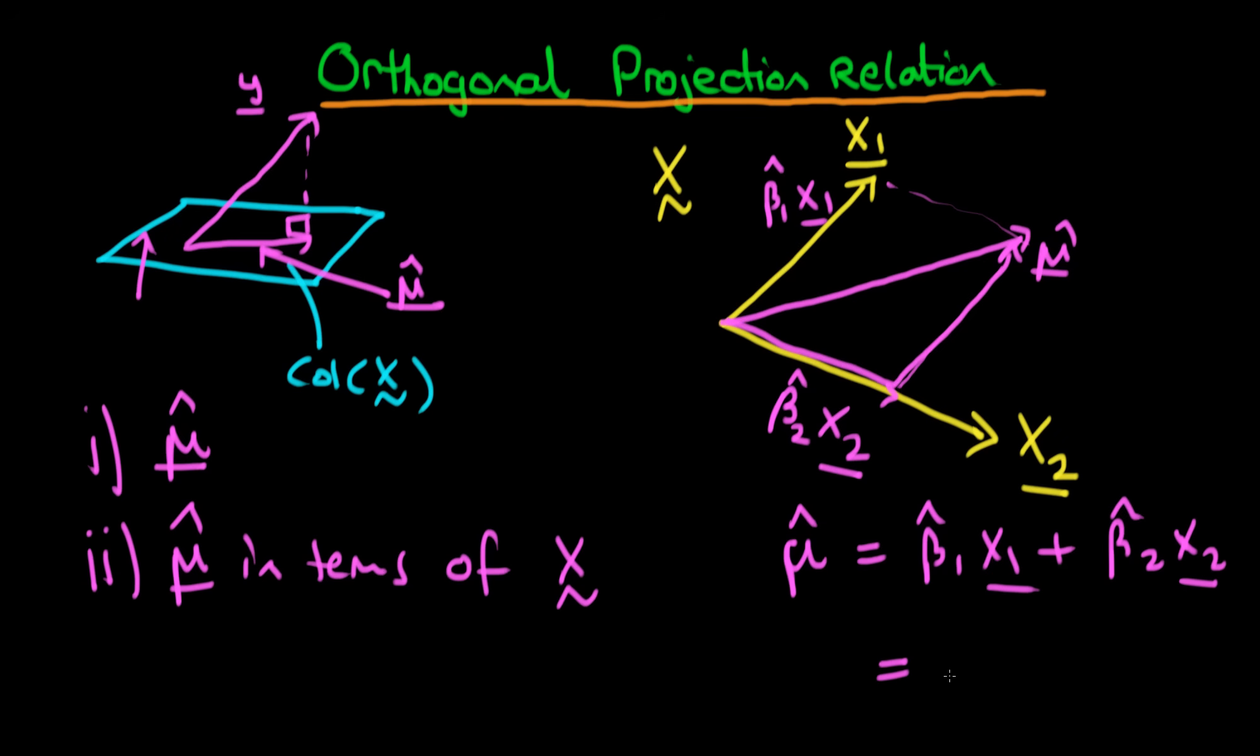If we were to write this a little bit more compactly, we can just write this as X, where X contains both X1 and X2 as its columns, times beta hat, where beta hat now is a 2 by 1 vector of the estimates or the least squares estimates of the parameter vector beta.